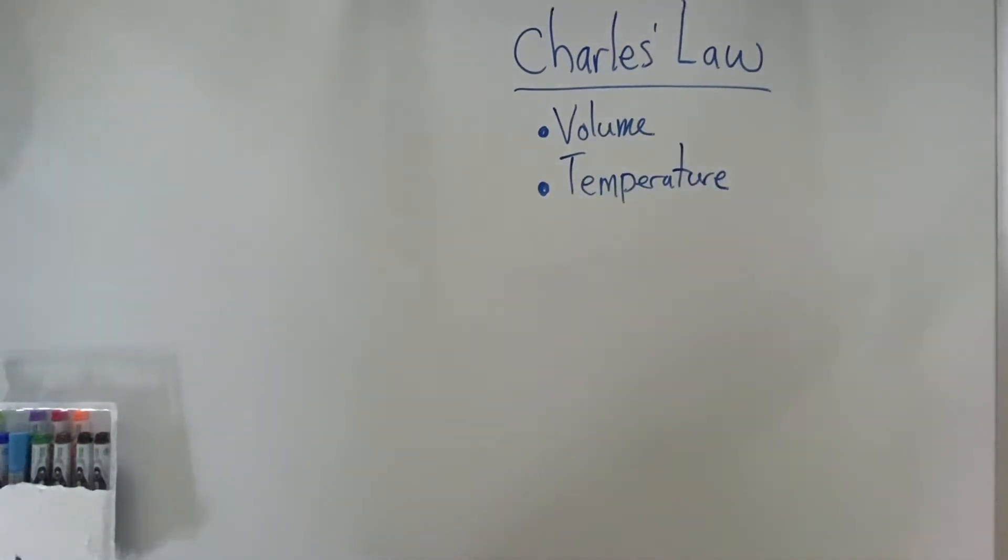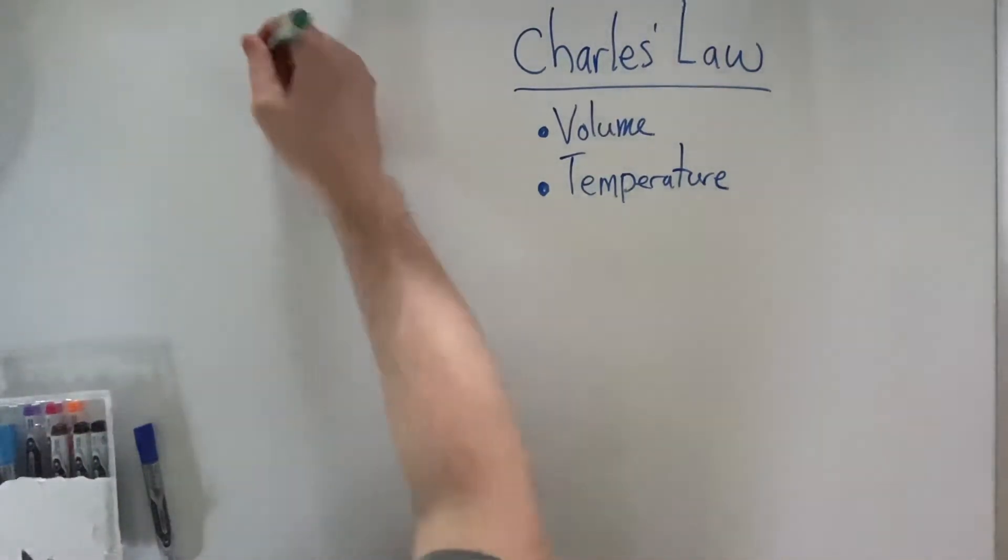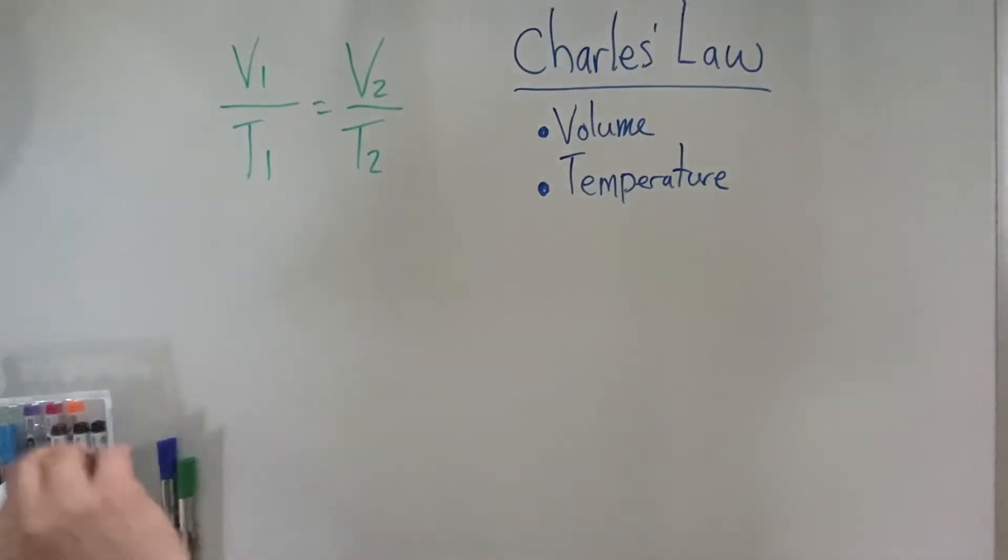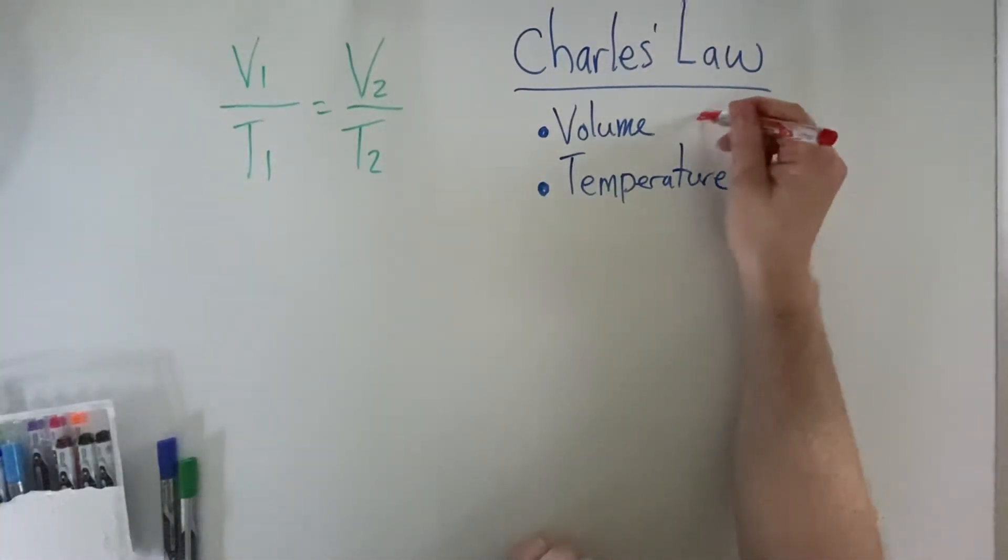Because it is a fractional relationship, the formula is V1 over T1 equals V2 over T2. Because this is a different type of relationship, we have to make sure our units are a certain set way. For this particular equation, volume must be in liters. So if you're presented with a problem in milliliters, you've got to convert it to liters.